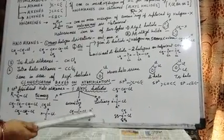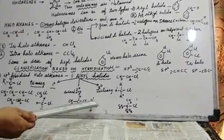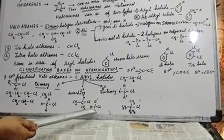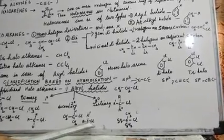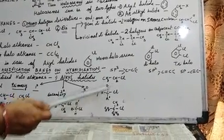In Secondary Alkyl Halides, the Carbon through which the Halogen is attached has two Alkyl groups — represented as R and R', because these two Alkyl groups can be the same or different, like methyl and ethyl. In Tertiary Alkyl Halides, the Carbon attached to the Halogen has three Alkyl groups (R, R', R''), which can also be same or different, such as methyl, ethyl, and propyl.